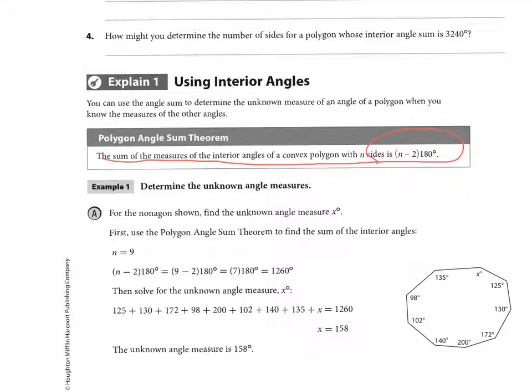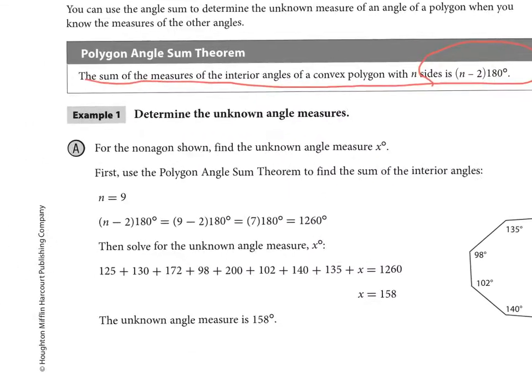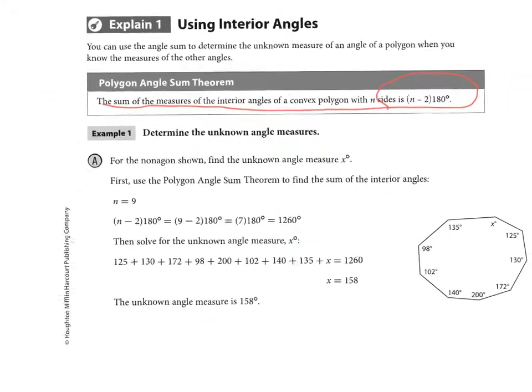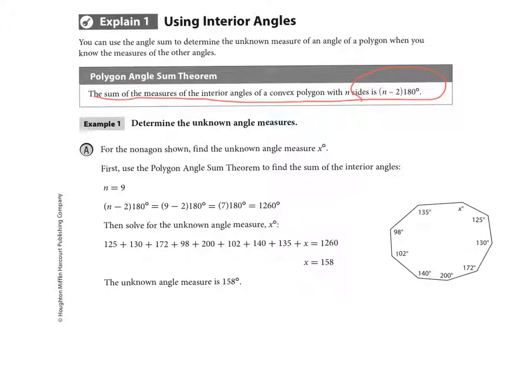Okay, so if we look at this first example, example A, it says for the nonagon shown, find the unknown angle measure x degrees. Okay, so first we need to find out what all of them add up to be. And if we look here, it has 1, 2, 3, 4, 5, 6, 7, 8, 9 sides.